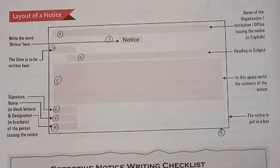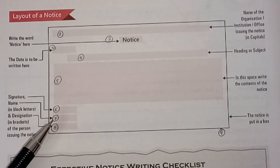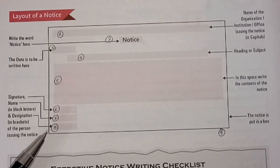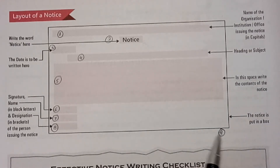Then comes number six — the signature of the person who is writing the notice. After that, number seven is the name of the person who is writing the notice. After that, number eight comes the designation of the person — that is, their post. Sometimes it's the class monitor, so you write 'monitor of the class', or 'head boy of the school', 'head girl of the school', or the vice principal, whosoever is writing the notice. And after doing all these things, close your box — that is number nine.